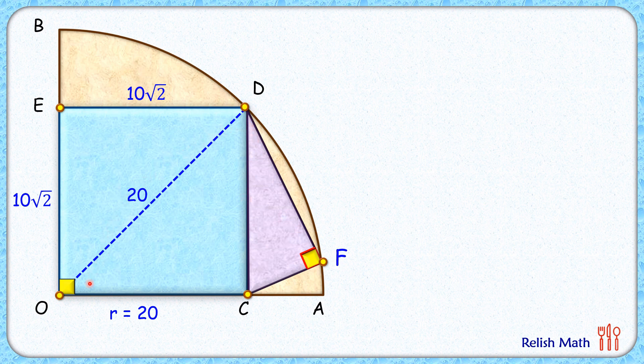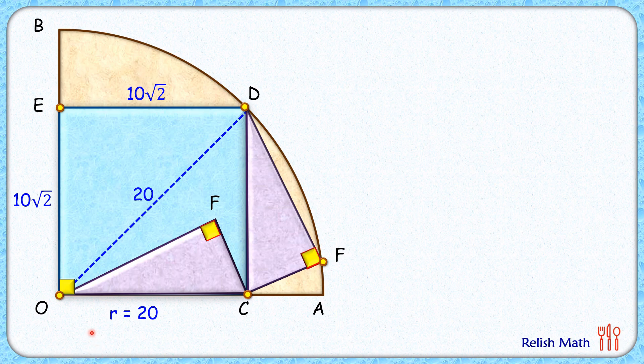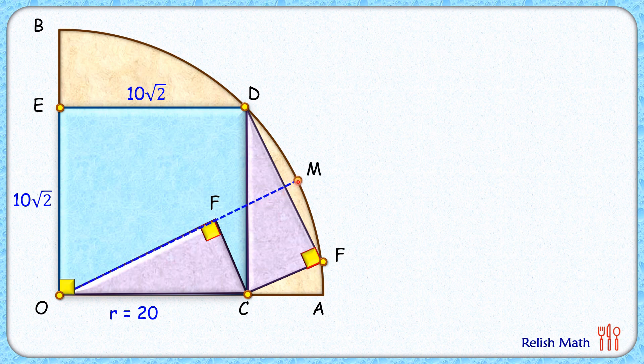Rotate it anti-clockwise, and D will fall on point O. For further solution, we don't need OD and 20, so let's remove it. Let's extend OF to meet the circle at point M. Now here, these two triangles are congruent, so if this angle is X, then this angle here will be X. Let's assume this angle in between is Y.